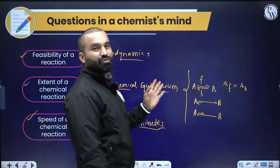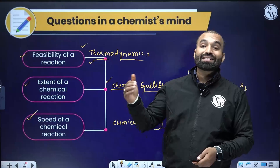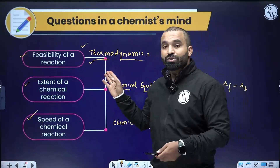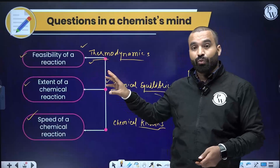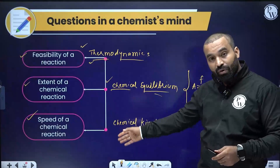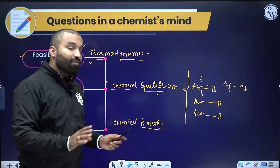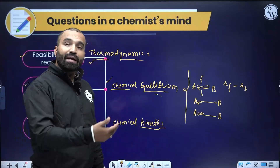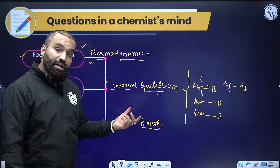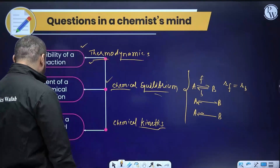Finally, how quick is the reaction — is it slow, fast, or moderate? That answer comes from today's chapter: chemical kinetics. Kinetics means speed — how fast or how slow a reaction is. Chemistry is a beautiful subject. Understanding the significance of each chapter — why we study thermodynamics, why kinetics — is key. Once you understand the chapter title, half the chapter is done.